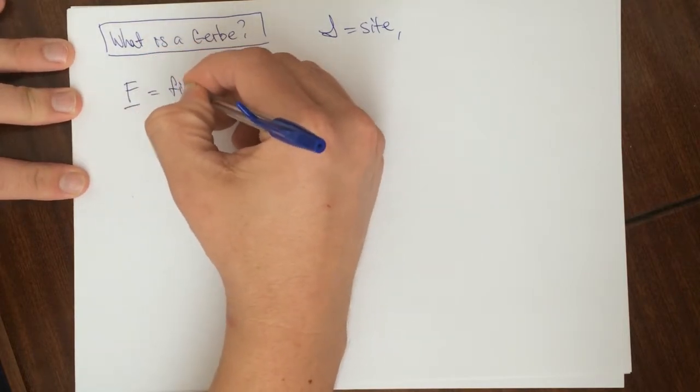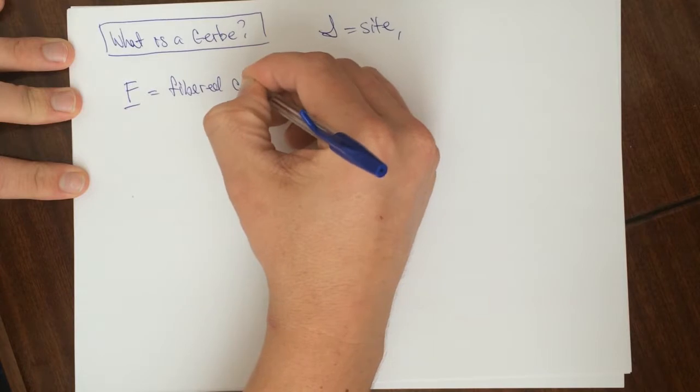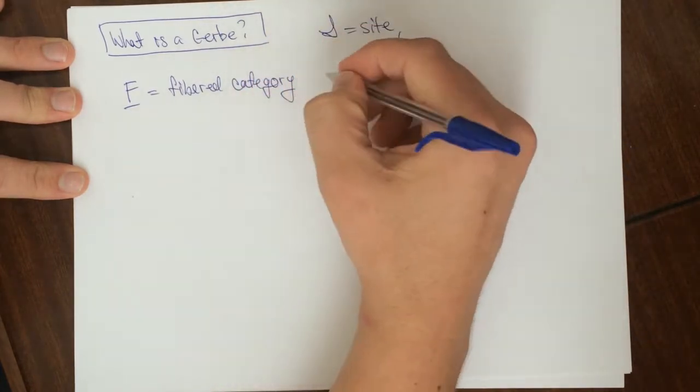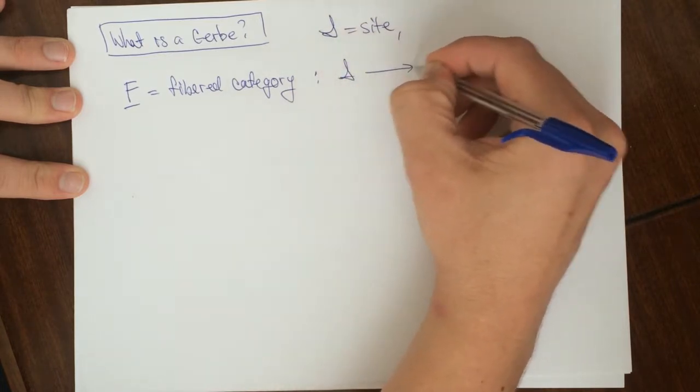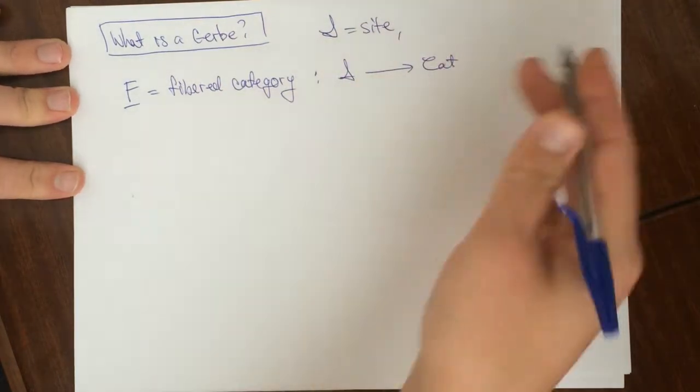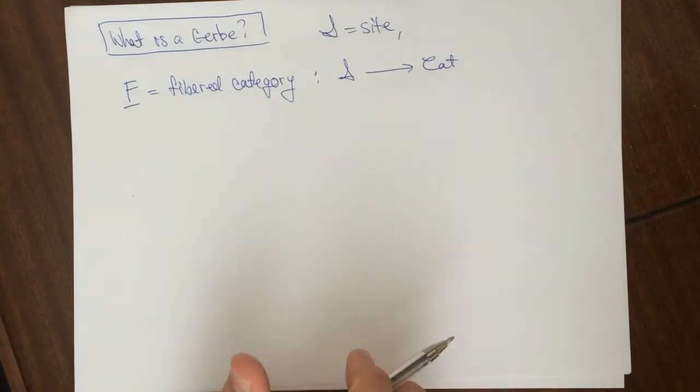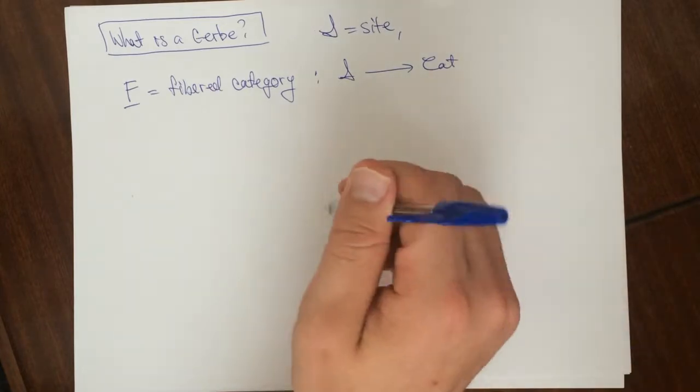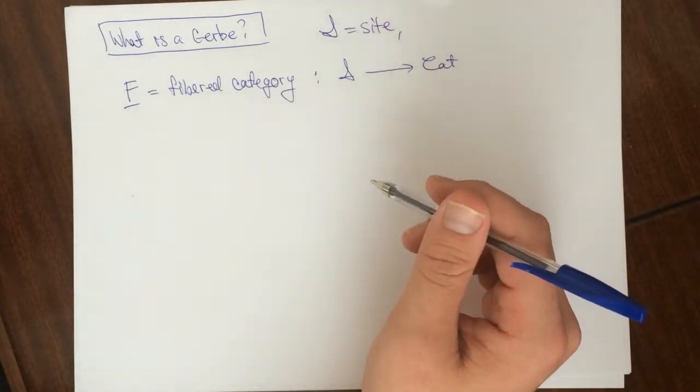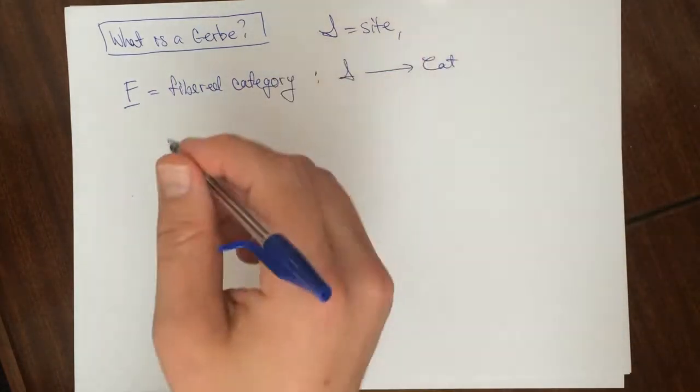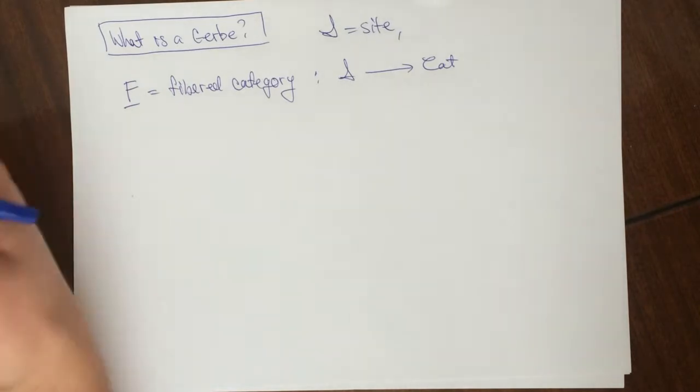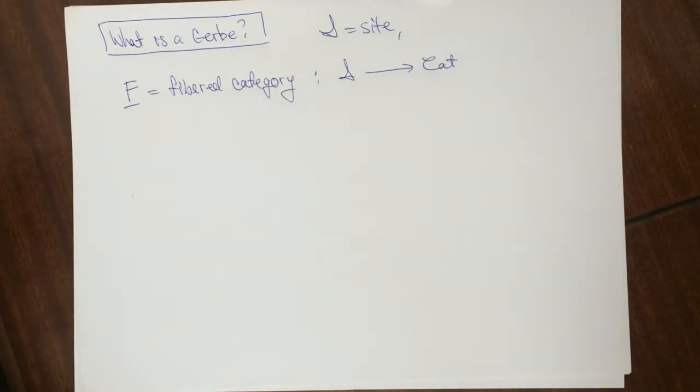So we're going to start with F. So this is going to be a fibered category. So here it's going to go from S to the category of categories. So for every open set, we have a category. And then there's these restriction maps, which we call the pullback, I star. So it's a contravariant functor. And then it has some transition data, and you can watch the fibered category video.